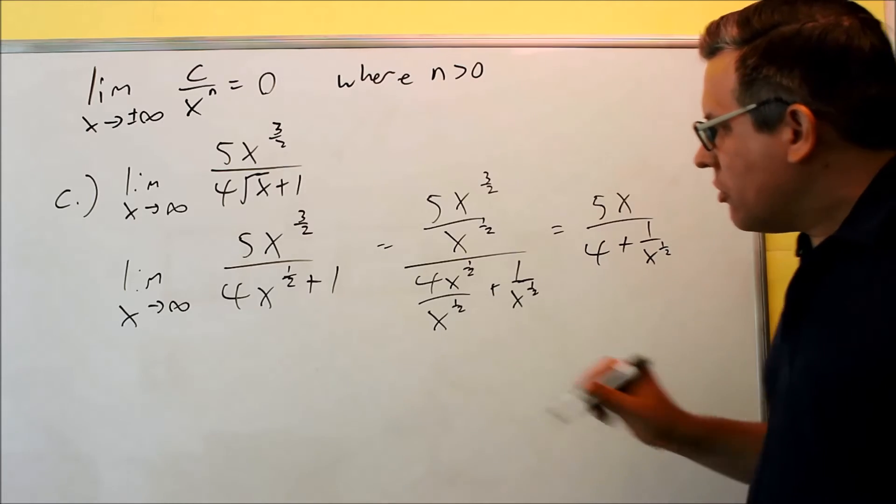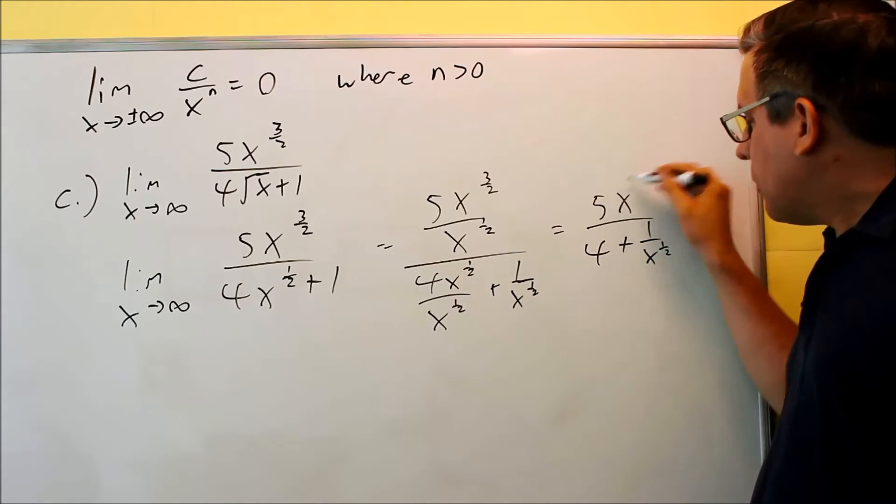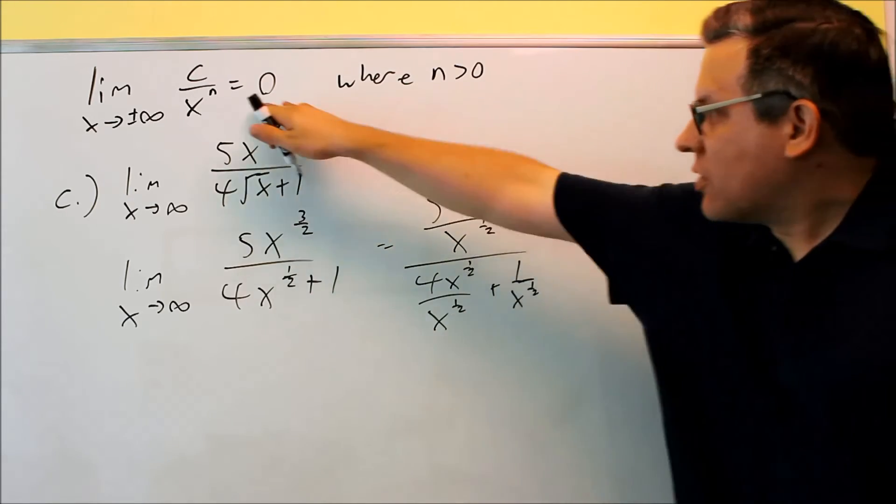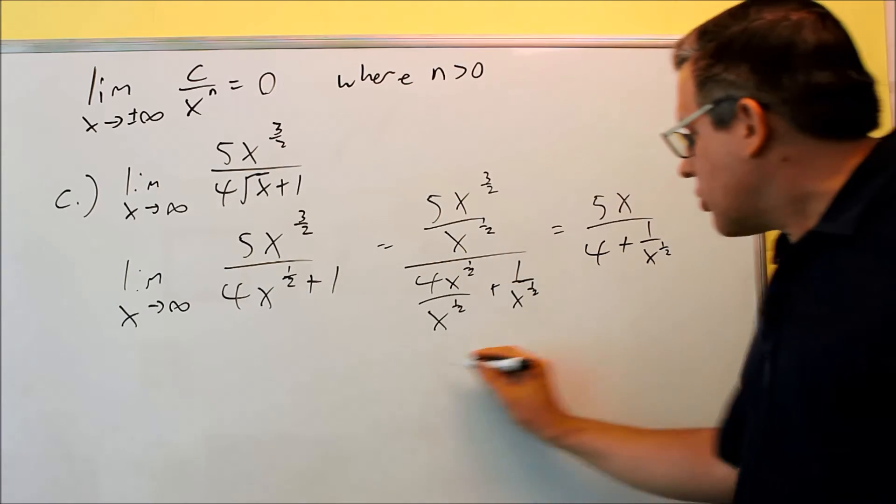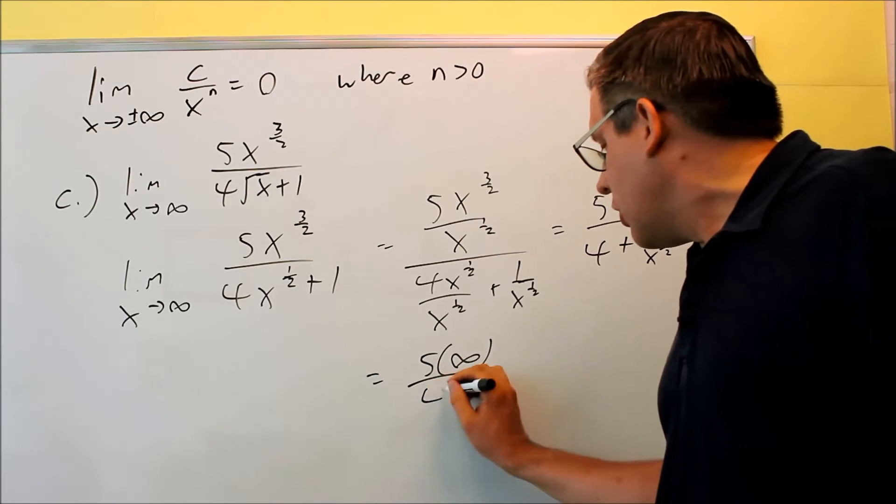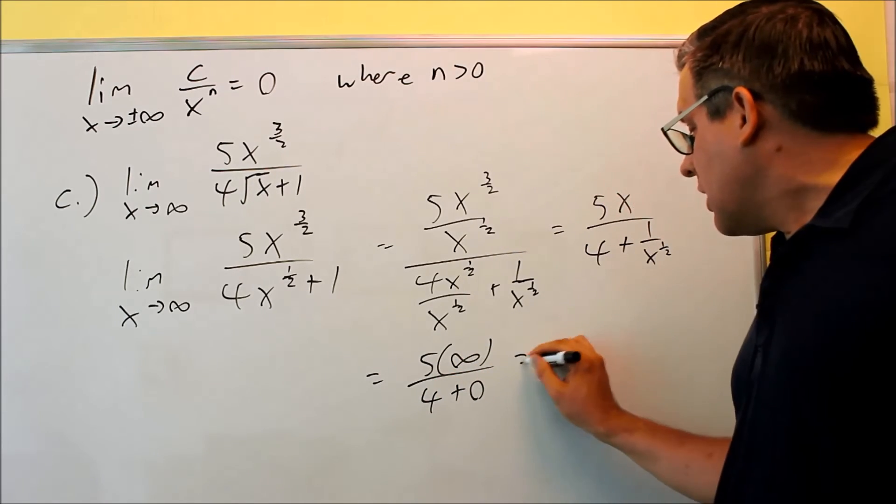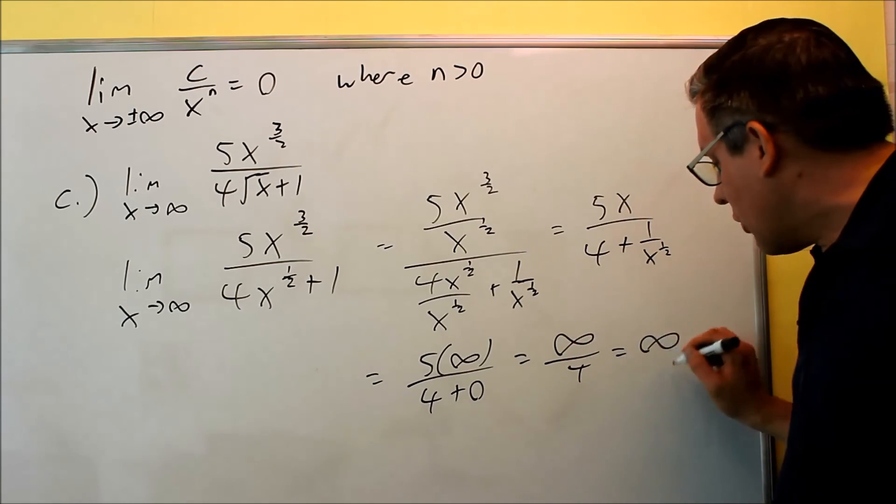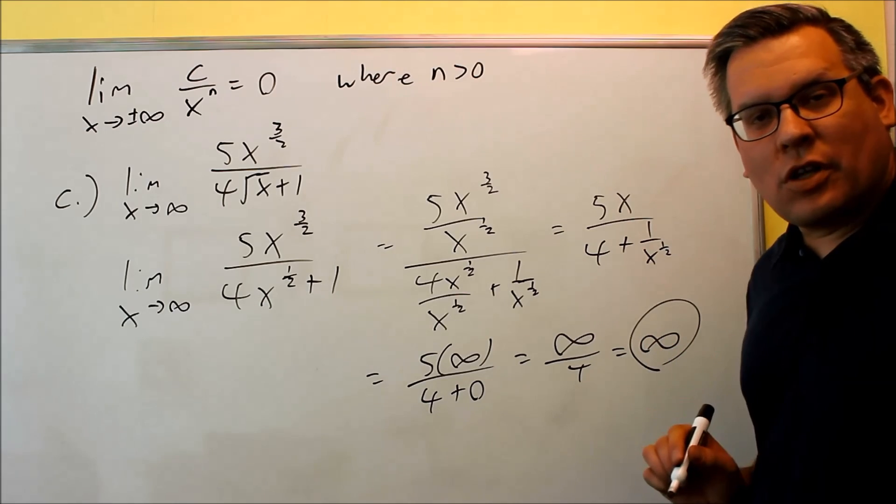As x goes to infinity, I'm going to be putting an infinity into that one, but this part is going to go to zero down below because of the same property we've been using. So, here's what it looks like, I have 5 times infinity, and the bottom I have 4 plus 0. I get infinity over 4, that's still going to be infinity, so I would have infinity is going to be the answer.